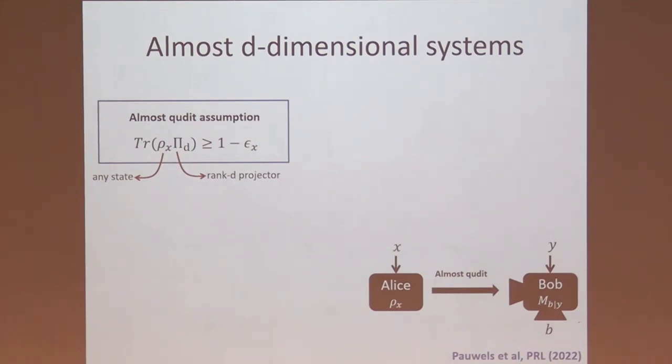What this relation means is that the state can be literally anything. It can live in any countably infinite dimensional Hilbert space. You have a rank d projector, and you don't know what this projects on. What you want is that your set of states are confined to this d-dimensional subspace, almost completely, up to a deviation of epsilon. If epsilon is zero, you are back to a normal qudit.